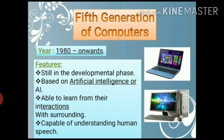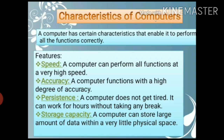Now let's understand the characteristics of computers. A computer is an electronic machine which takes input from the user, processes it, and gives the output. It has certain characteristics that enable it to perform all functions correctly. The advantages include: first, speed — it can do work very fast; second, accuracy — it functions with a high degree of accuracy and provides accurate results in less time; third, persistence — a computer doesn't get tired and can work for long hours; fourth, storage capacity — it can store a large amount of data.